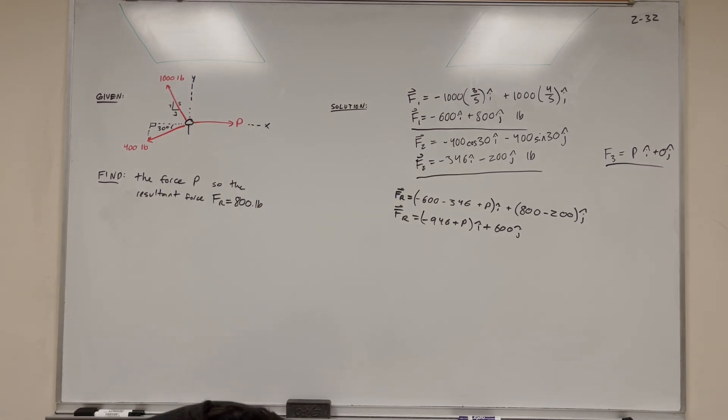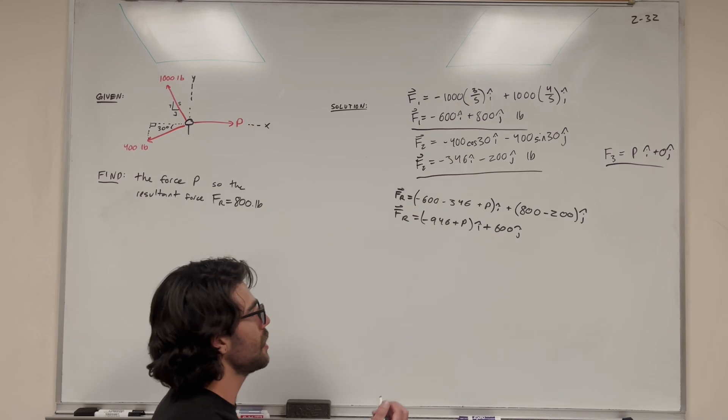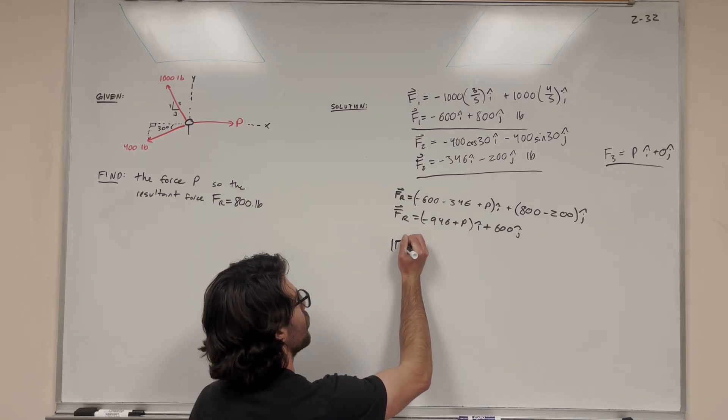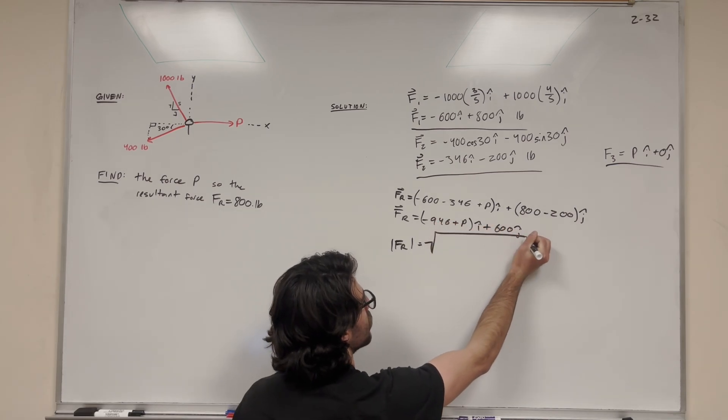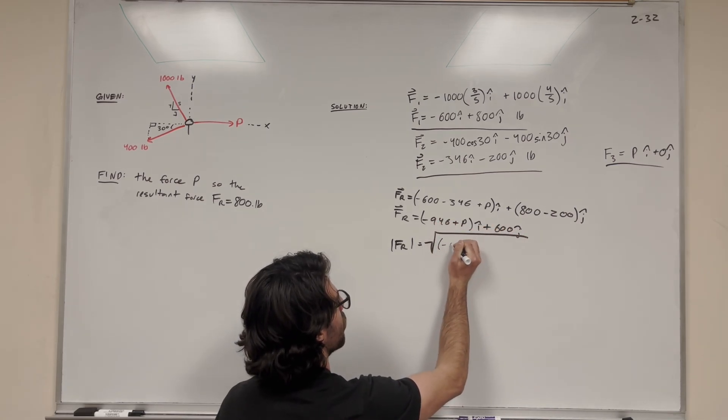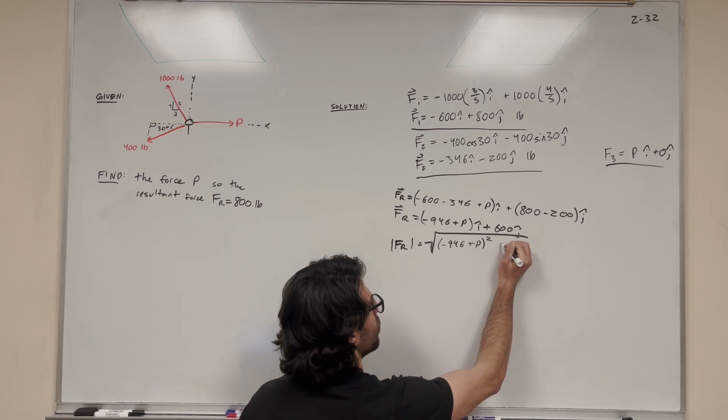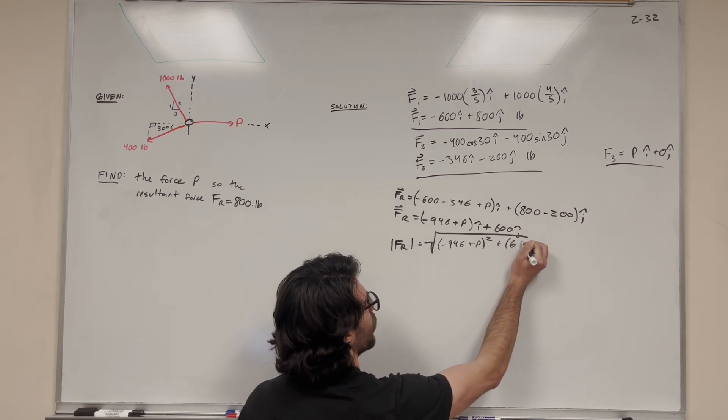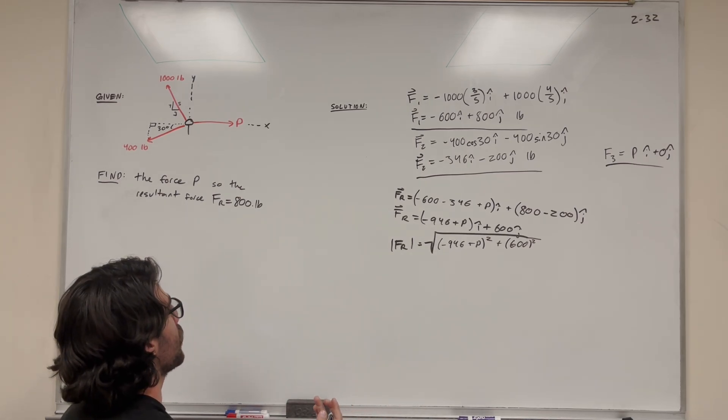To find magnitude, we use Pythagorean theorem. We know a squared plus b squared equals c squared. For the magnitude of the force resultant, which is what these bars denote, we take the square root of the i component, negative 946 plus p squared, plus the j component, 600 squared.